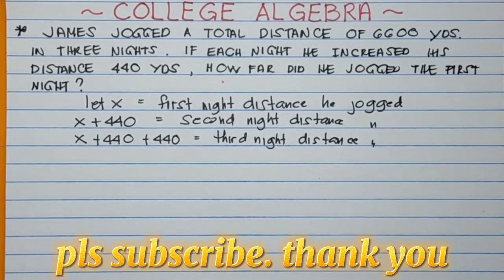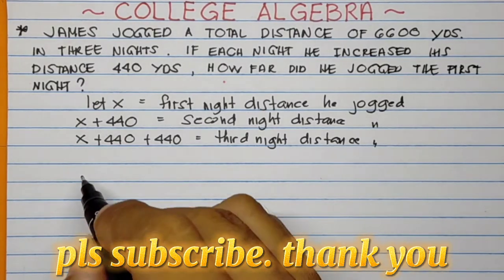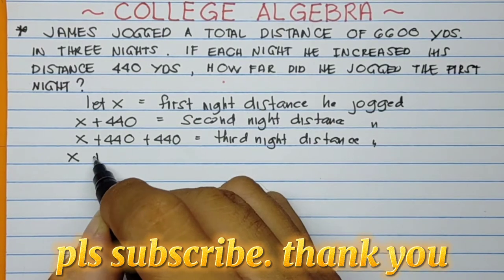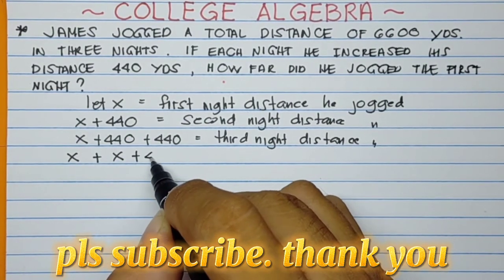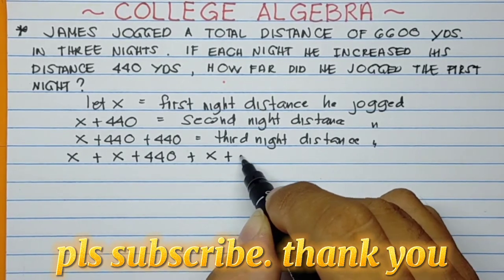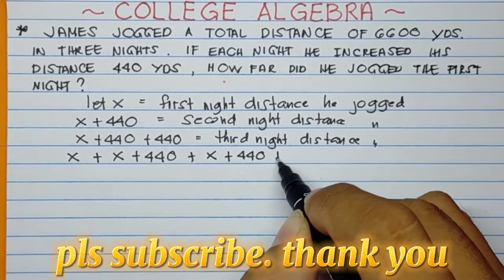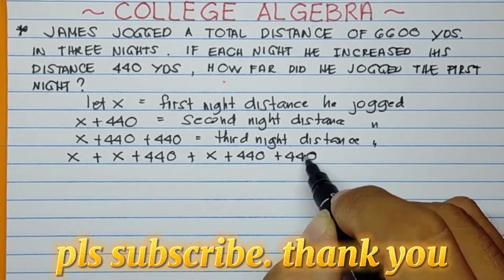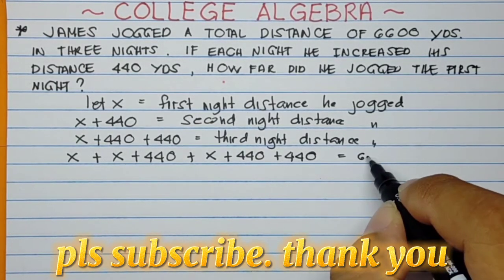So now we'll proceed with the equation. It says here that the total distance he covered is 6,600 yards. Therefore, X plus the second night X plus 440, plus third night distance X plus 440 plus 440, equals 6,600.